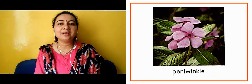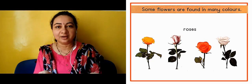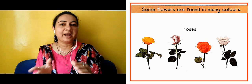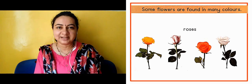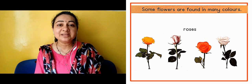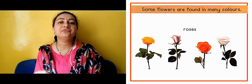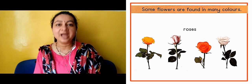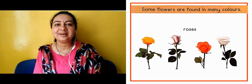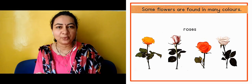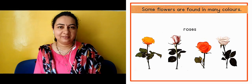Now the next slide is showing us some flowers that are in different colors. This one is rose, this one is in different colors as you can see. You can identify which color it is — yellow rose, pink, red, white.